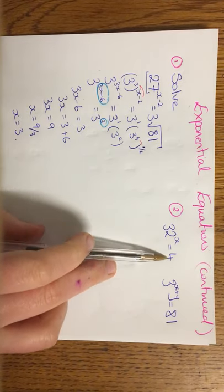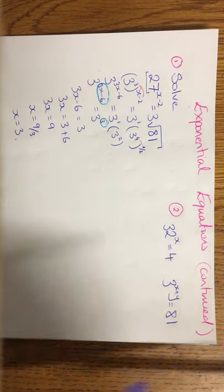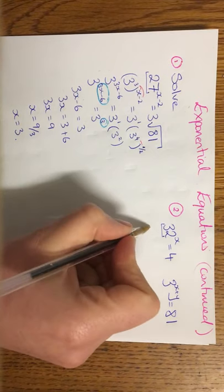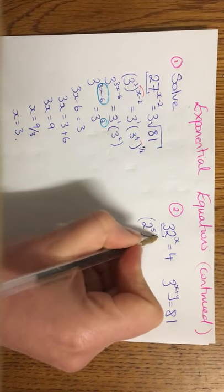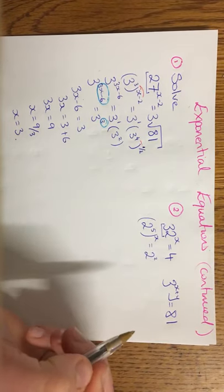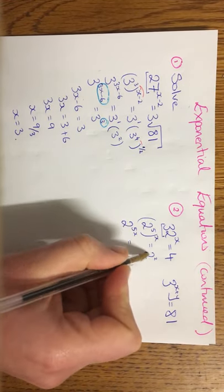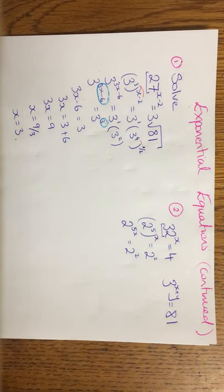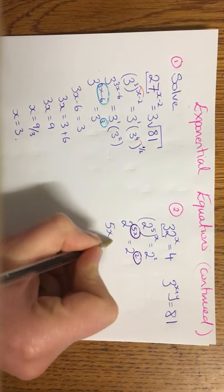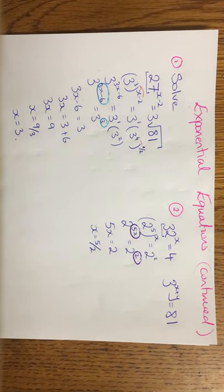Carrying on over here. So I have 32 to the power of x is equal to 4. Same base on both sides is what I'm looking for. So my base I'm going to choose is 2. So rewrite 32 using 2 as a base. So it's going to be 2 to the power of 5 all to the power of x equals 2 to the power of 2. Power to a power you multiply. 2 to the 5x equals 2 to the 2. So that's perfect. Circle, circle. So you have 5x is equal to 2. x is equal to 5 over 2. And I kind of leave them as a top-heavy fraction.